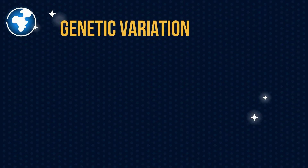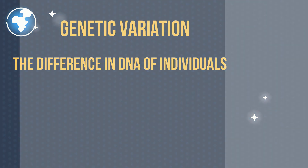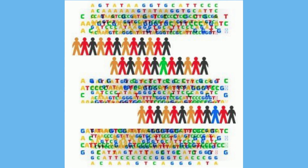And genetic variation: the difference in DNA of individuals. I have two pictures to illustrate this. You can see the wheat on the left and the right have different genes — slightly different. And the other picture shows all the people on earth, and each of them have a slightly different genetic code.